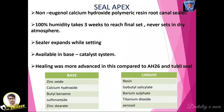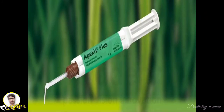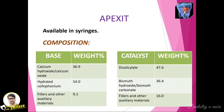The Seal Apex base and catalyst components include zinc oxide, calcium hydroxide, butyl benzene sulfonamide, and zinc stearate. The catalyst consists of basic resin, isobutyl salicylate, barium sulfate, titanium dioxide, and aerosol. The second calcium hydroxide sealer, Apex It Plus, is available in syringes — no mixing needed. The base consists of calcium hydroxide or calcium oxide (approximately 37%), hydrated colophonium (54%), filler, and other auxiliary materials (~9%). The catalyst contains thymol salicylate, bismuth hydroxide or carbonate, fillers, and other auxiliary materials. It offers excellent biological tolerance, is easy to apply, radiopaque, and has a hard set.